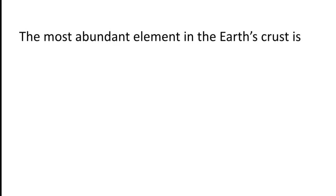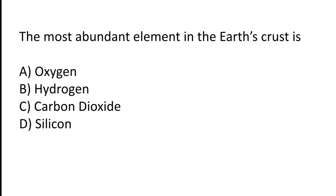The most abundant element in the earth's crust is: oxygen, hydrogen, carbon dioxide, or silicon? The correct answer is option A — the most abundant element in the earth's crust is oxygen.